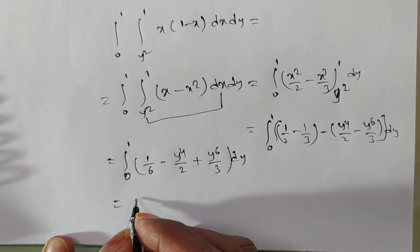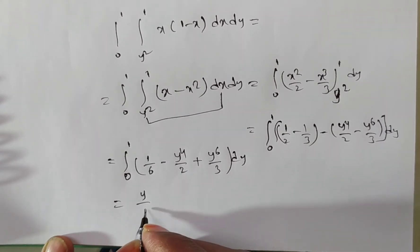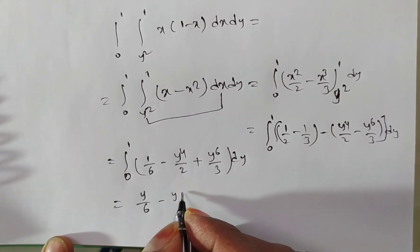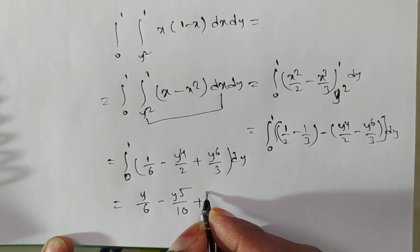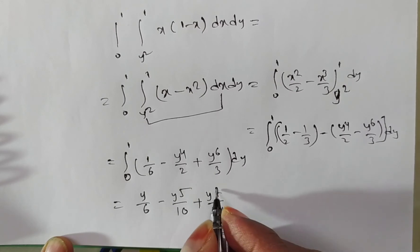Now, we have to integrate this one. Here you observe, integral 1 by 6 is nothing but, with respect to y, y by 6 minus y power 5 by 5 into 2, 10, plus y power 7 by 7 times of 3 is nothing but 21.